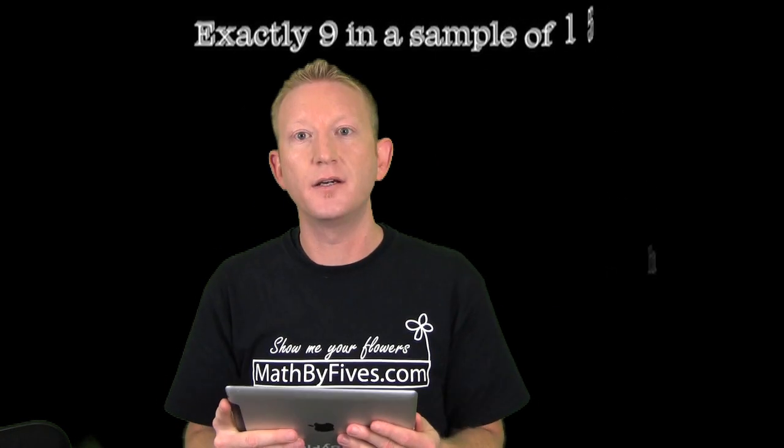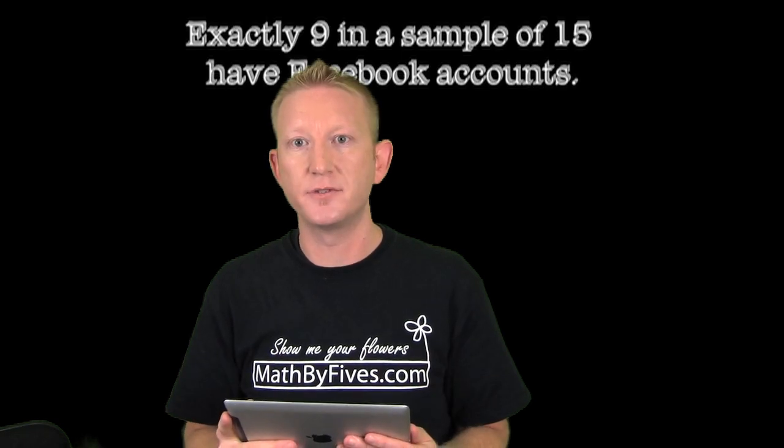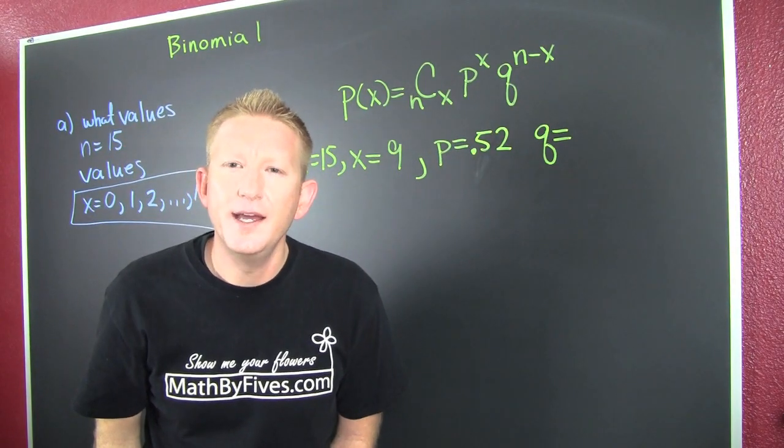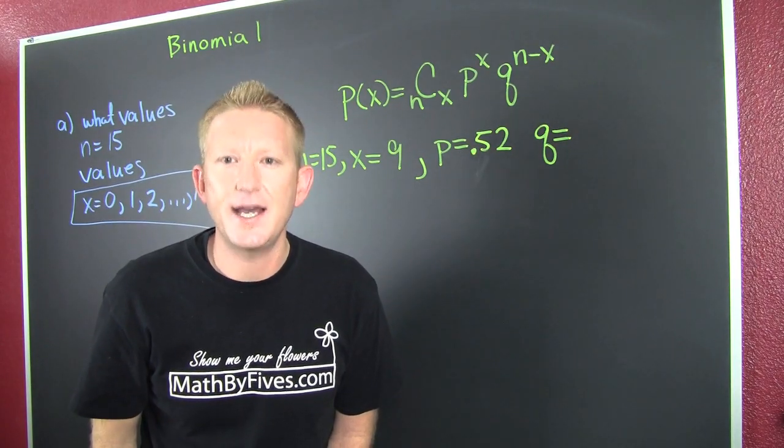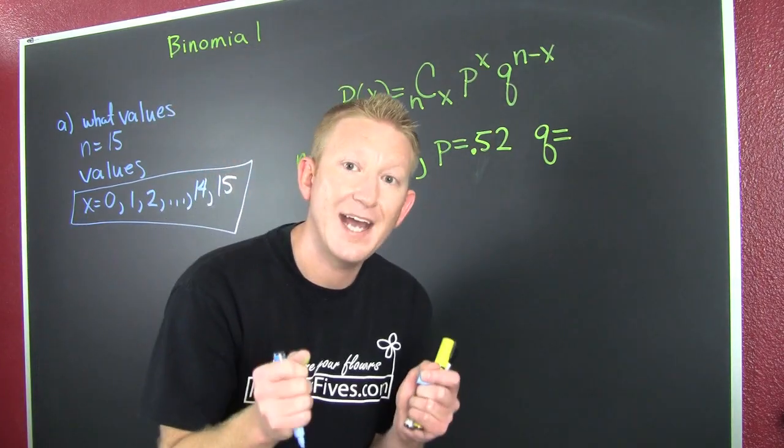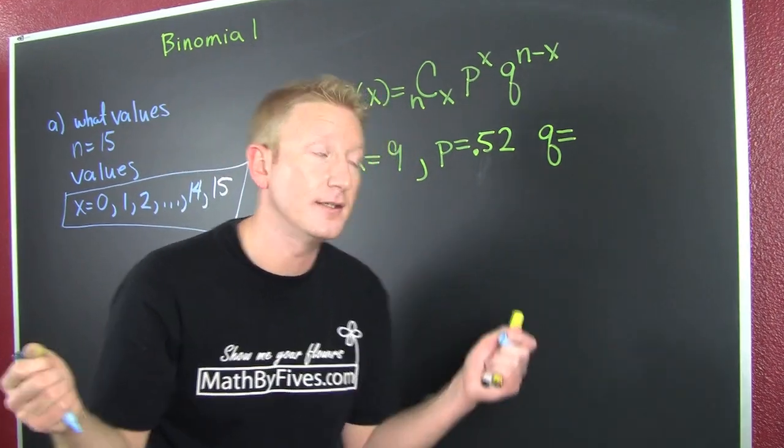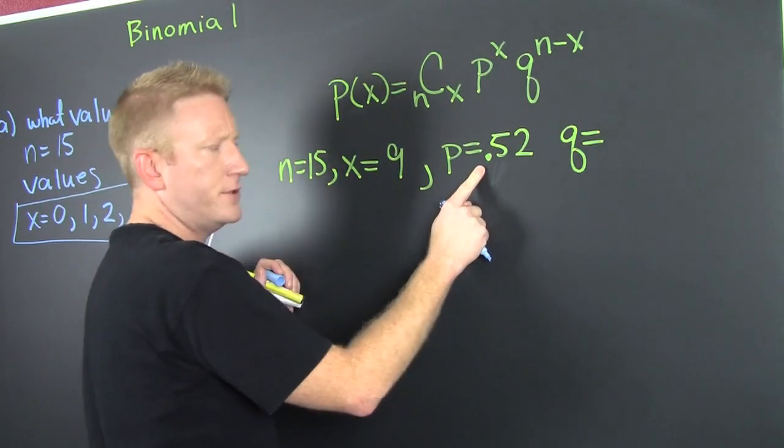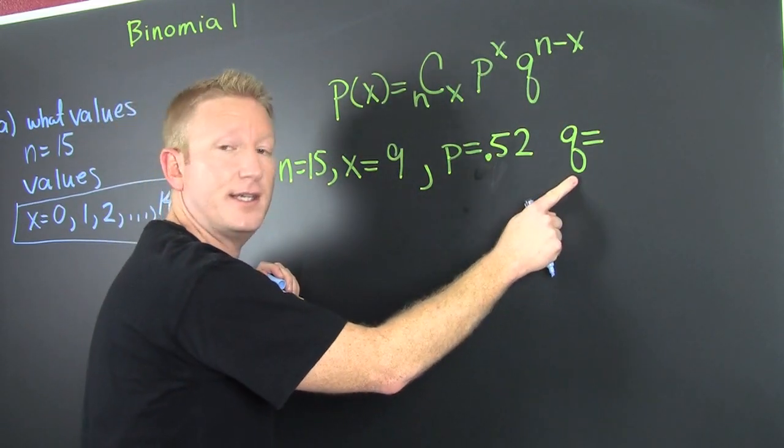Find the probability that exactly nine American college graduates in a sample of 15 have Facebook accounts. Let's do that with the formula. In part B, they want to know the probability that you'll get exactly nine people with an account out of 15. They tell you the probability that somebody has an account is 52 percent. How are we going to get Q?